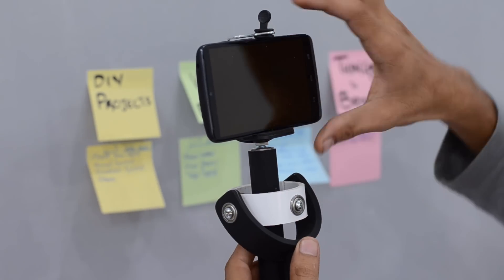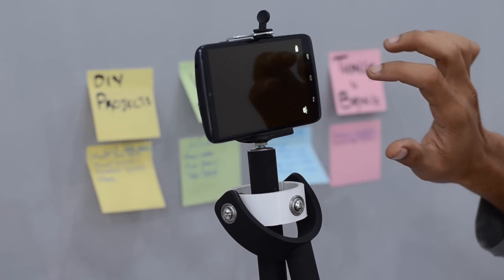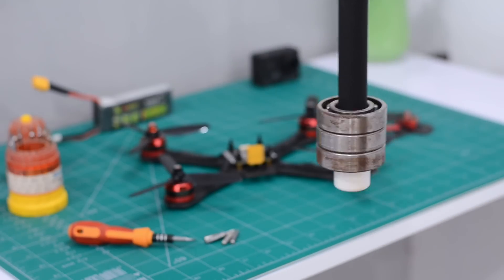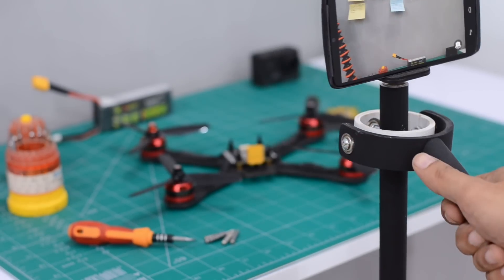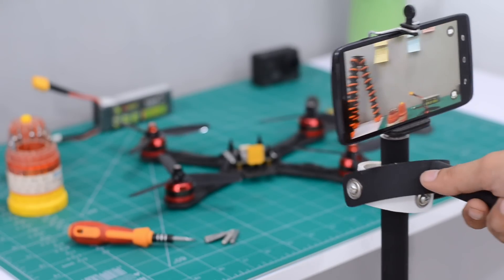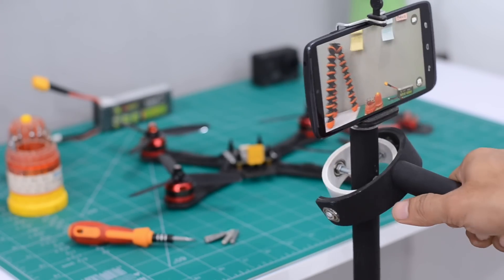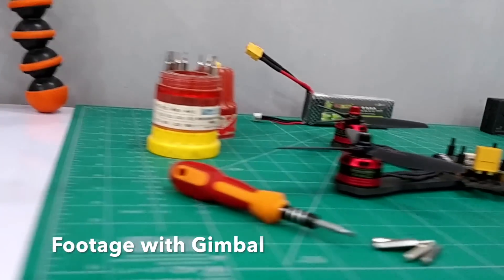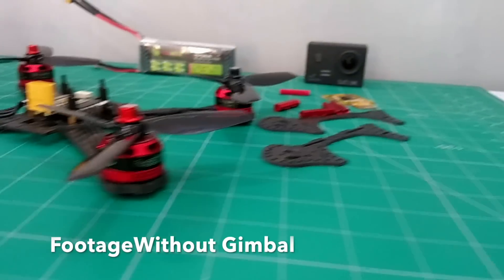This DIY manual mobile gimbal works on the principle of inertial force that is produced by the dead weight hanging just beneath the central rod that later serves as our smartphone holder. This allows us to stabilize both X and Y axis and thus we can get some extra smooth footage out of our smartphone which otherwise is almost impossible to get.